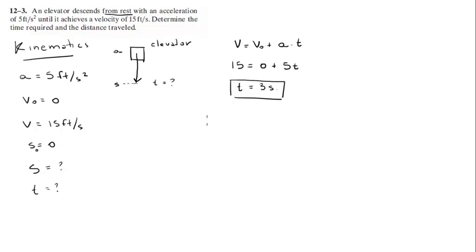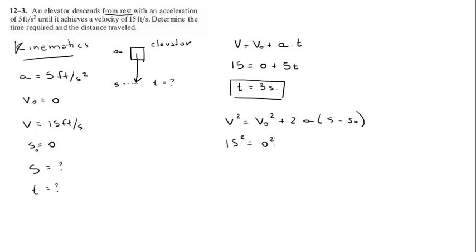Now that we got the time, we can use this other kinematic formula which says that V squared equals V naught squared plus 2 times A times (S minus S naught). All you gotta do is plug in the numbers: 15 squared equals 0 squared plus 2 times 5 times (S minus 0). We're looking for S, and S is going to come out to be 22.5 feet.